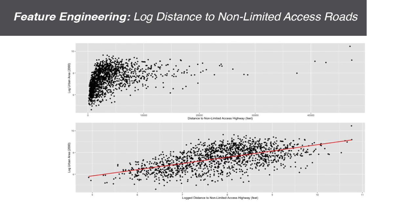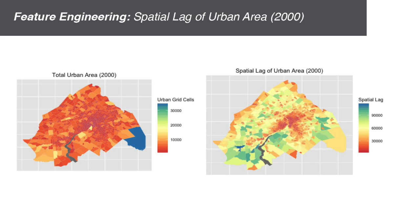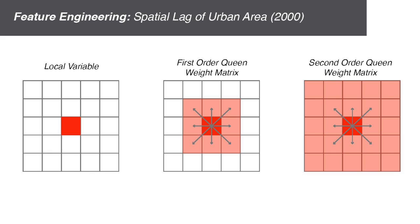Taking the log of distance to the nearest road greatly improves its fit with the dependent variable. We know that urbanization rates are spatially autocorrelated, meaning that highly urbanized tracts are likely to cluster together. In light of this, we can create spatial lags, which are the sums of urbanized cells in any tract's neighbors. Spatial lags created using a first order queen weight matrix account for a tract's neighbors, whereas second order matrices account for the neighbors of those neighbors as well. To predict for one time period, we include spatial lags from the previous time period.